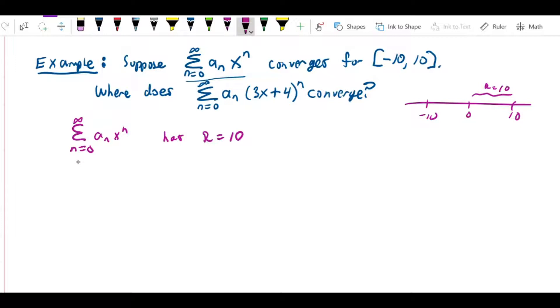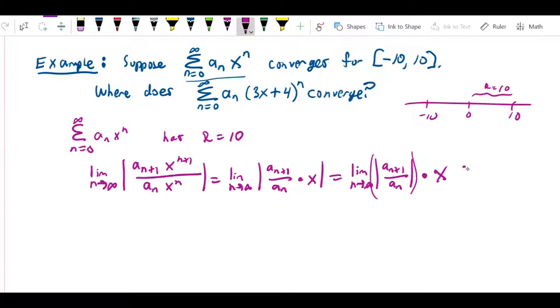So what we can do is we can use this to sort of back into what the ratio test said about the convergence of this series that allowed us to find that was the radius of convergence. I'll show you what I mean. At some point in order to find the radius of convergence, we calculated limit as n approaches infinity of a_{n+1} x^{n+1} over a_n x^n, which equals the limit as n approaches infinity of a_{n+1} over a_n times |x|, and this had to be less than 1.